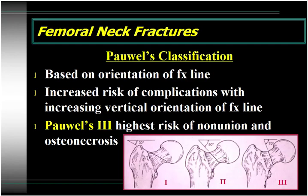It's also important to understand Pauwels' classification of femoral neck fractures, based on the orientation of the fracture line. As you go from Pauwels 1 to Pauwels 3, the fracture line becomes increasingly vertical, with a higher incidence of complications — specifically nonunion and osteonecrosis. The problem with Pauwels 3 is that there are tremendous shear forces across this fracture due to the native forces at the hip joint, making the Pauwels 3 fracture very unstable. These fractures occur more commonly in younger patients with high-energy trauma.